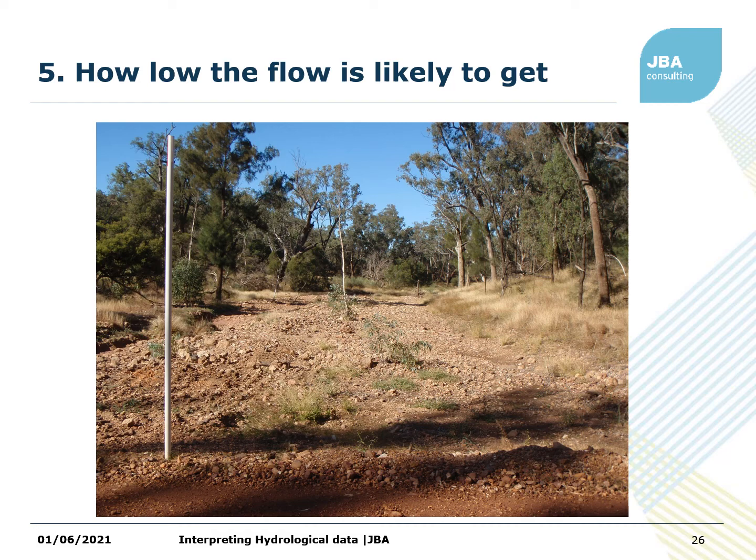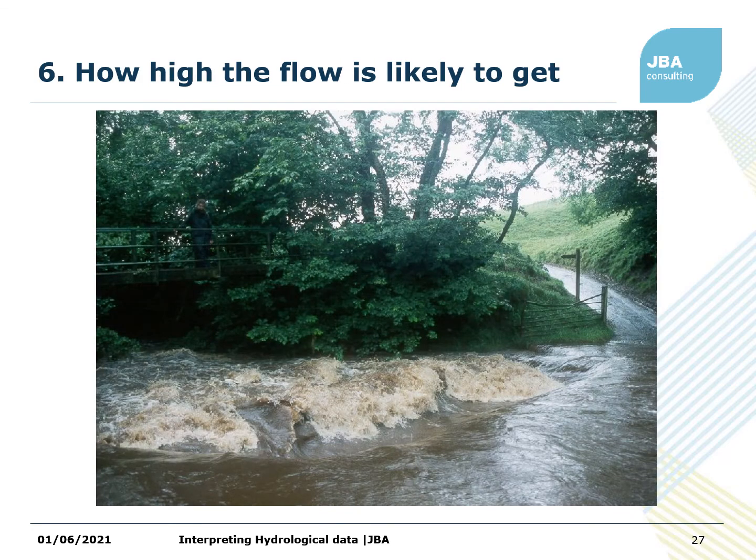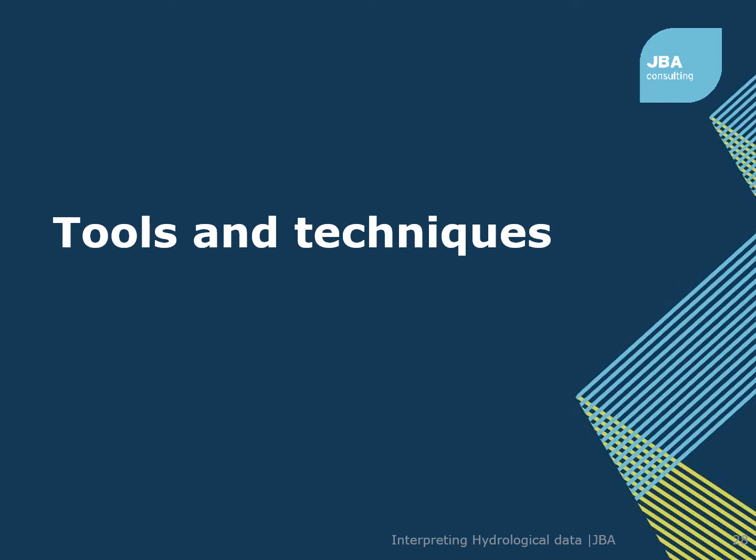Other things you can get from your dataset: how low is the flow likely to get? This is a river in Australia where the answer is zero — much less likely to see that here, but in a chalk catchment you do get seasonal watercourses. And then obviously, how high is the flow likely to get? This is a picture of a river in the north of England during a flood event, and this will be picked up in the data you have available. We'll now have a look at some tools and techniques that might be useful to know about, even if you're not doing them yourselves, so you understand what other people are doing when they talk to you about their work.